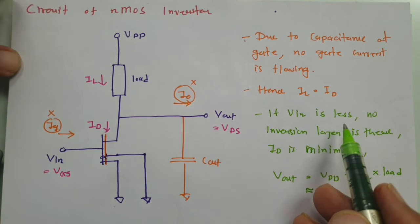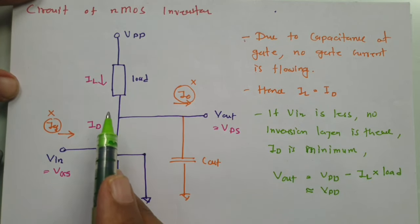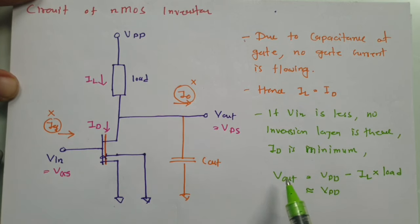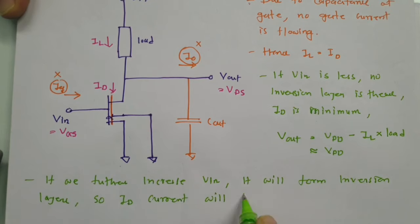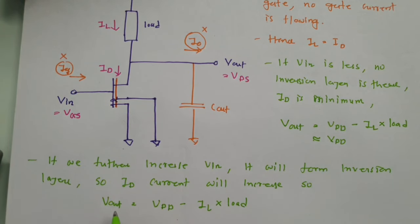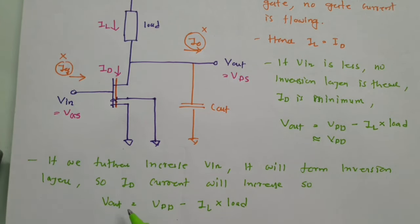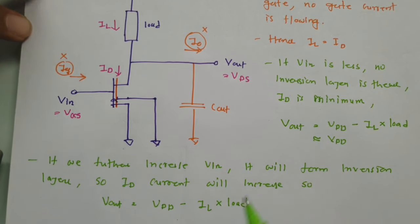As we increase Vin, an inversion layer forms and ID current increases. As ID increases, IL increases, and output voltage Vout equals VDD minus IL times load decreases. So at a higher value of input, output voltage is lower. At a lower value of input, output voltage is higher.